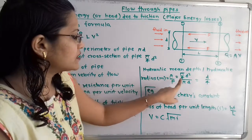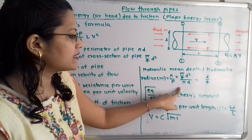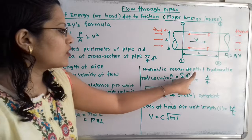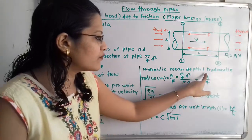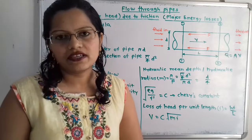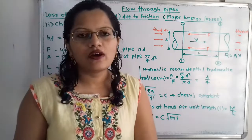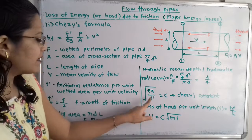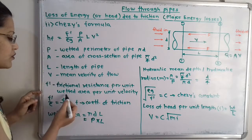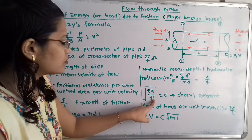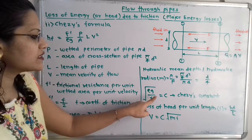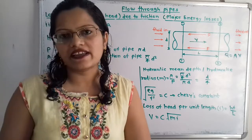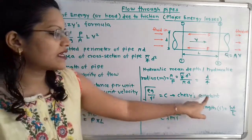The hydraulic mean depth m = A/P. Since A = (π/4)d² and P = πd, simplifying gives m = d/4. So we can directly use m = d/4 in calculations. Chezy's constant C is calculated as C = √(ρg / F'). Here ρ is the density and F' is the frictional resistance per unit wetted area per unit velocity. If F' and ρ are given, we can calculate C, or in some problems, C is directly given.